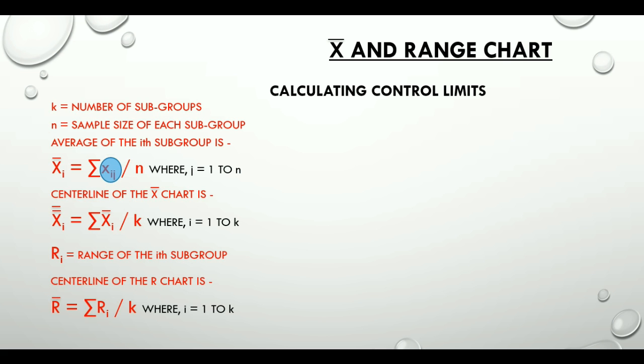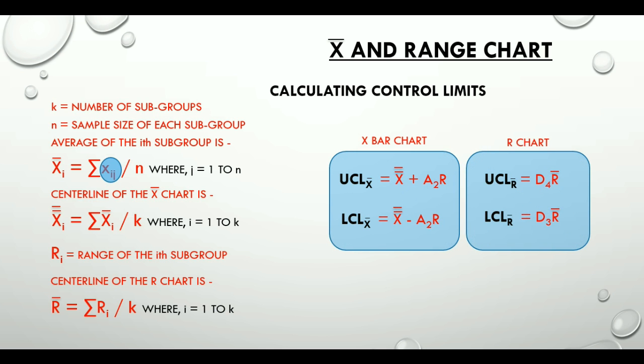Now here are the formulas that we use to calculate the upper control limit and lower control limit for X bar chart and then for R chart. In these formulas A2, D3 and D4 are control chart constants which have table values. We can get those values from available tables for control chart constants corresponding to the sample size that we have.